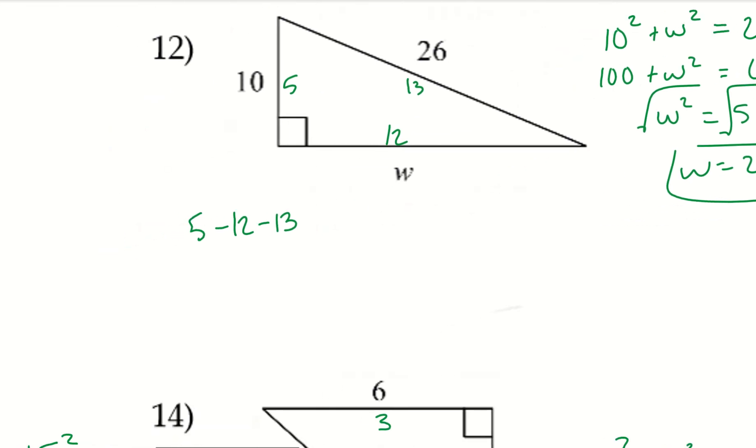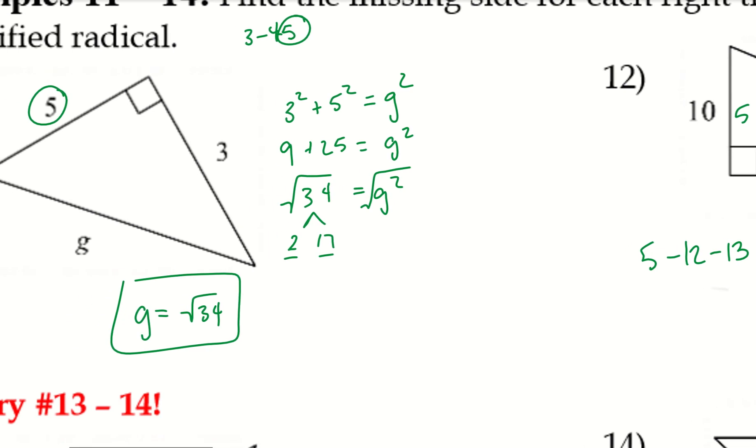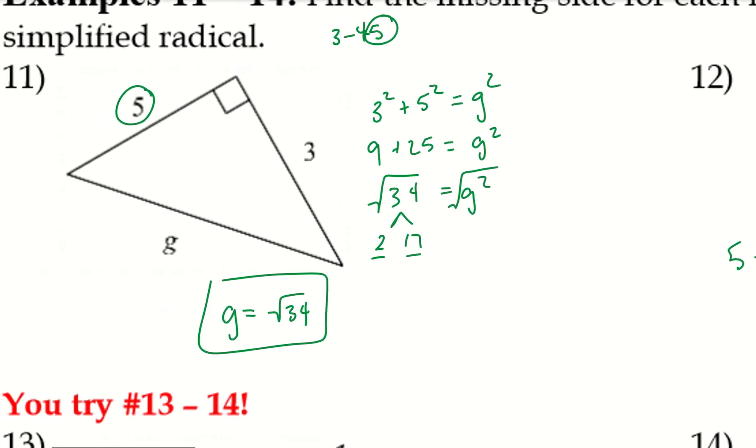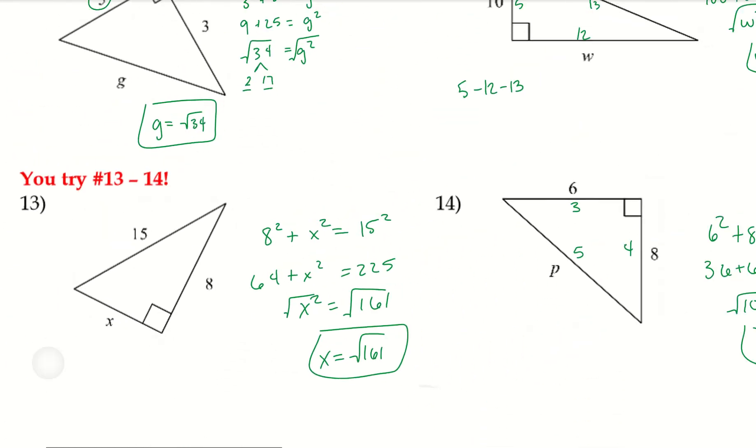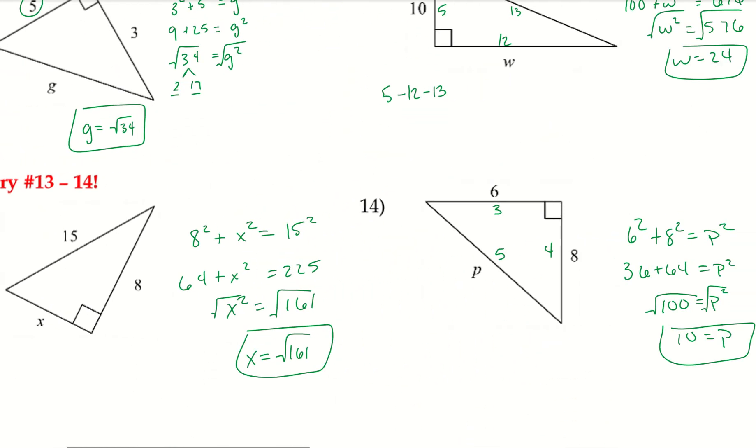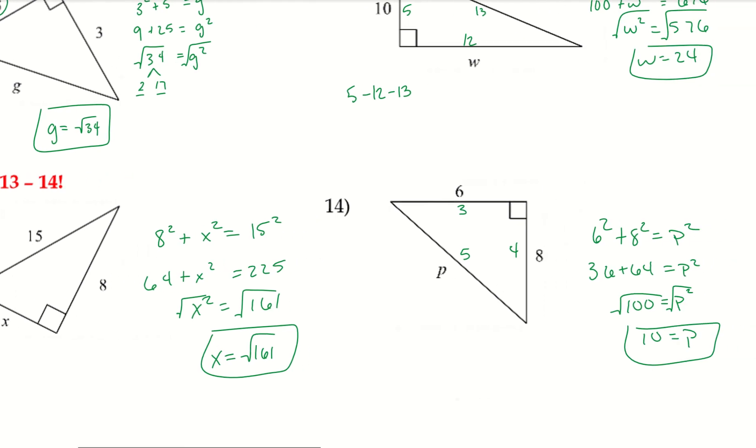Alright. I want you guys to go ahead and try 13 and 14. I'll give you a second to pause that video. Try those two out. Alright. Let's go ahead and take a look at that. So, 13, we had to use the Pythagorean theorem. 14, we could have noticed that we had a Pythagorean triple. Or, if you didn't quite notice that, you could have used the Pythagorean theorem as well. Both will give you the same result.